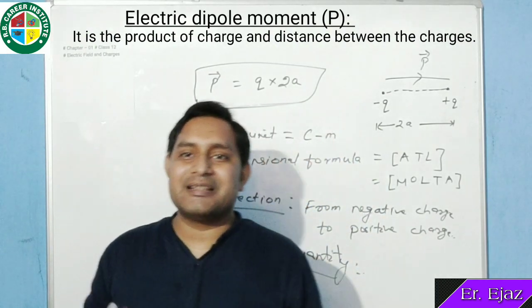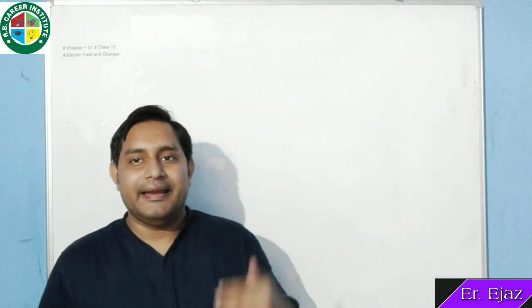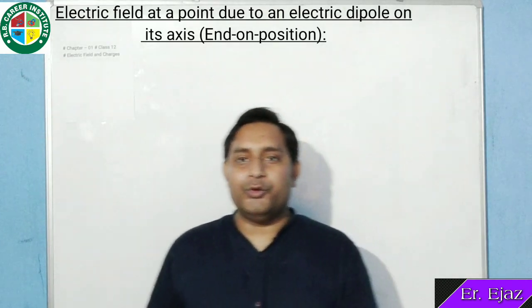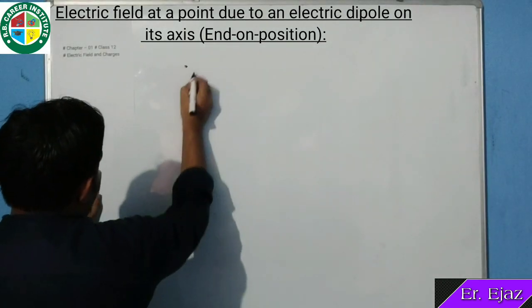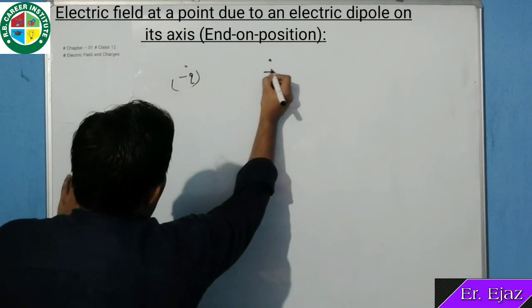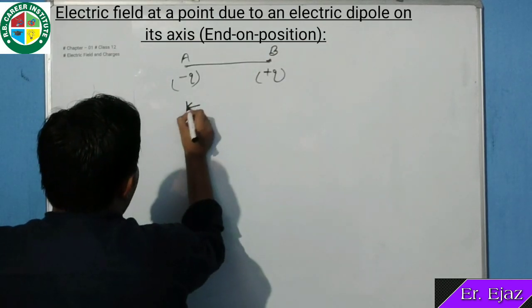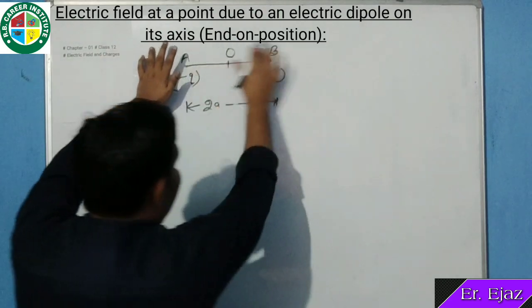अब हमें electric field intensity का expression पढ़ना है due to electric dipole। Now we will discuss electric field at a point due to an electric dipole। इसके लिए दो expressions हैं — एक end-on position (axial line) और दूसरा broad side-on position (equatorial line)। हमारा एक charge है minus Q at point A, दूसरा plus Q at point B। Distance of separation 2A है और O midpoint है।